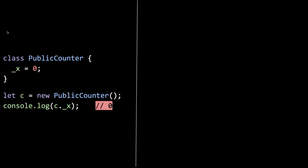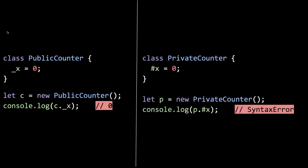The last thing I would want is for us to become like Java conventions where you have to use getters all the time — that's not what this is about. But if you have a counter with a field underscore X, which is kind of discouraged, you can still access it. But with private fields using the hash, you can't access it outside the class. That's at stage three.